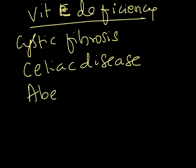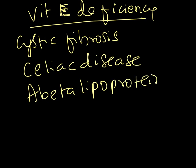Vitamin E deficiency can also be seen in abetalipoproteinemia, which is caused by a mutation in the gene coding for MTP — microsomal transfer protein. This disorder impairs chylomicron formation, so transport of vitamins A, D, E, and K from the intestine to the liver is decreased.